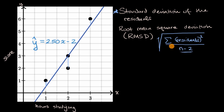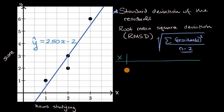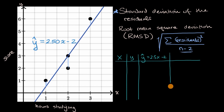Some of you might recognize strong parallels between this and how we calculated sample standard deviation early in our statistics career — I encourage you to think about that. But let's actually calculate it by hand to see how things play out. I'm going to set up a little table with columns for x, y, ŷ (which equals 2.5x minus two), and the residual squared — which is (y minus ŷ) squared. Then we'll sum them all up, divide by n minus two, and take the square root.